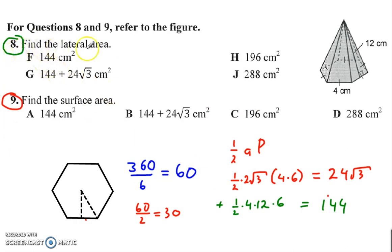Eight and nine to find the lateral area here. That's just finding the six triangles. So we do a half times four times 12, where 12 is the slant height here. And then times six, because there are six of those. Or you could have found the perimeter times a half times 12. One way or another, you get 144.